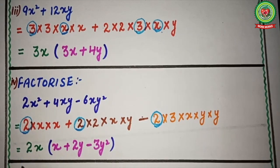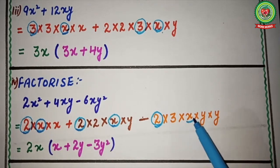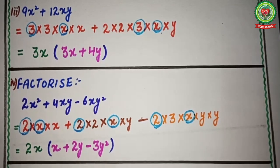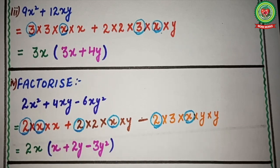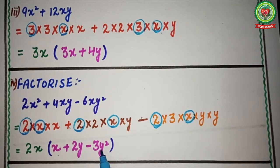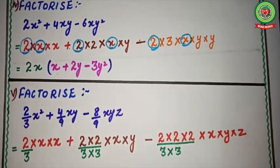Since 2 is common in all three, we write 2. Next, x is also present in all three terms, so we write multiply by x. Therefore, 2x is the common factor. No other number or variable is common to all three. We place the remaining factors in a bracket: x remains from 2x², plus 2y from 4xy, minus 3y² from 6xy². So the answer is 2x(x + 2y − 3y²).